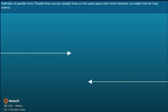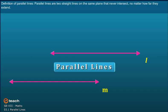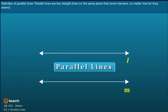Definition of Parallel Lines: Parallel lines are two straight lines on the same plane that never intersect, no matter how far they extend.